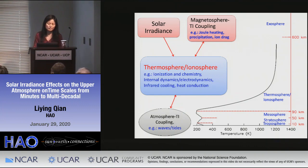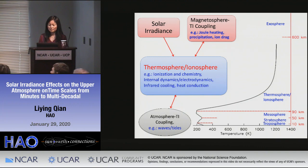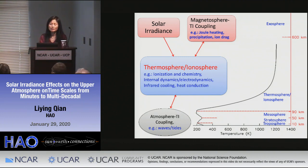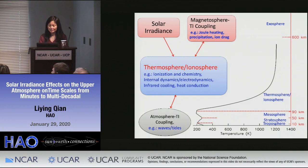The upper atmosphere here means the thermosphere and the embedded ionosphere, between about 90 kilometers and 600 kilometers. The atmosphere is divided into layers based on the temperature profile. We have the troposphere, stratosphere, mesosphere, thermosphere, ionosphere, and above that is the exosphere.